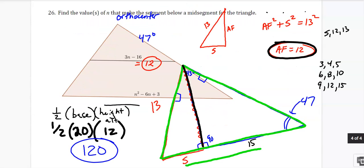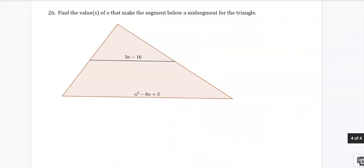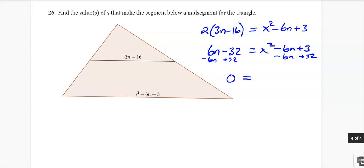All right. And then number 26, the big dog. Find the values that make the segment a mid-segment. To be a mid-segment, we need to double the mid and make that equal the bottom. So we distribute. Oh crap, we got a quadratic. We can't use normal algebra. We need to set it equal to 0. So I need to minus this to get it to the other side. I need to add that, minus this, add that. So we get x squared minus 12x plus 35.